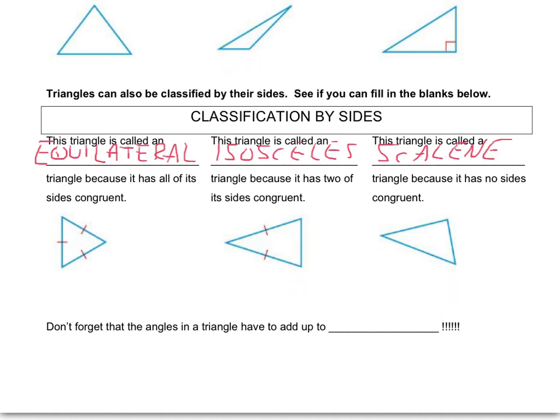Lastly, what we want to remember throughout this chapter and going forward is that the angles in a triangle always, always, always add up to 180 degrees. No matter what type of triangle it is, no matter what it looks like, 180 degrees is the total of all of the angles in a triangle.